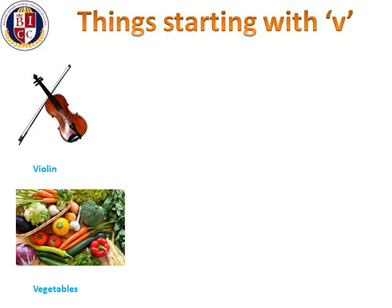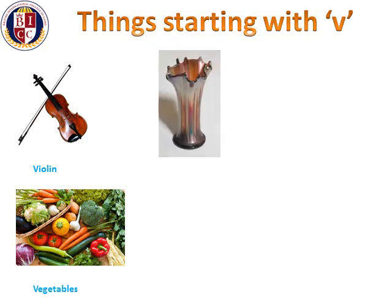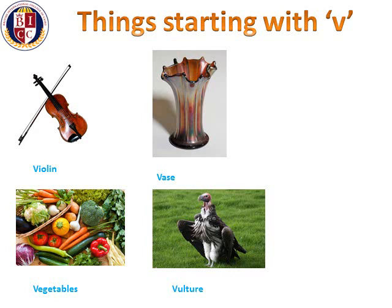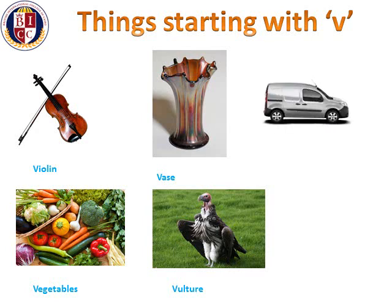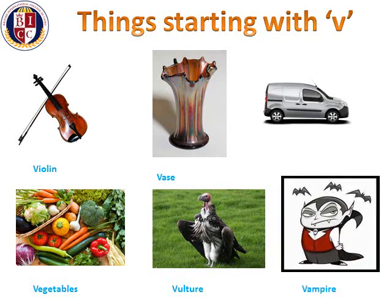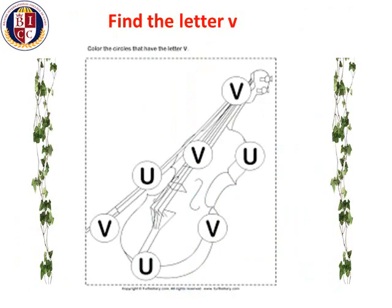Things starting with v: violin, vegetables, vase, vulture, van, vampire. Have a little look at the violin and see how many letter v's there are.